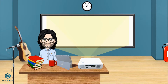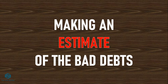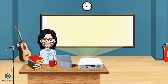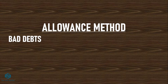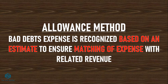Now, the second way to account for bad debts expense is by making an estimate of bad debts. Notice the word 'estimate' — it means we are only approximating how much we expect won't be paid on our receivables. Under the allowance method, we recognize bad debts expense even if we are not 100% sure that the customer won't pay.